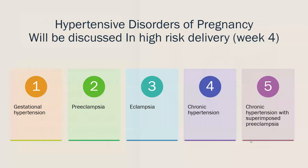A quick overview of hypertensive disorders: gestational hypertension occurs after the 20th week and can progress to preeclampsia, then to eclampsia with seizures. There is also chronic hypertension — present before pregnancy — and chronic hypertension with superimposed preeclampsia. These will be discussed at length in the high-risk delivery section; they are mentioned here because they appear in this chapter and in course point quizzes.